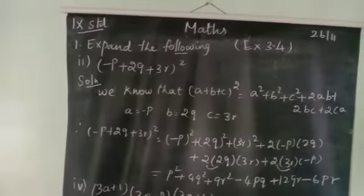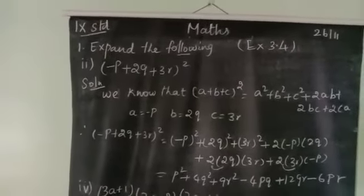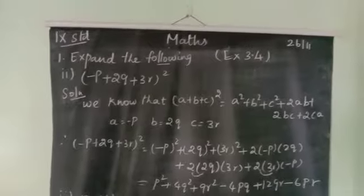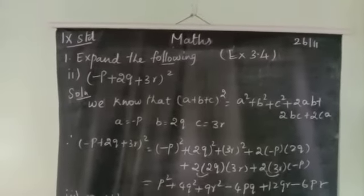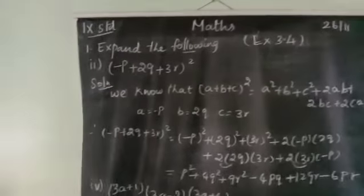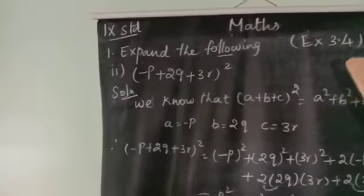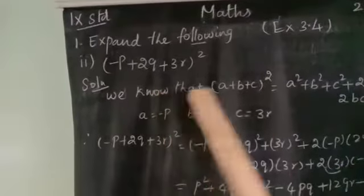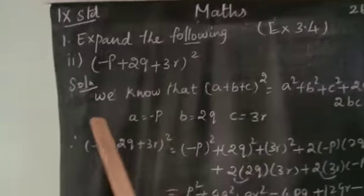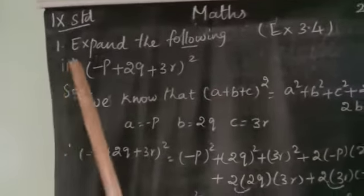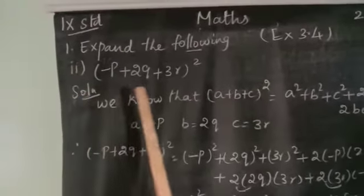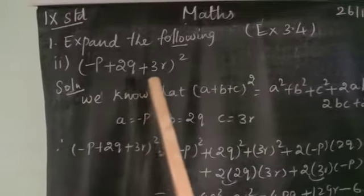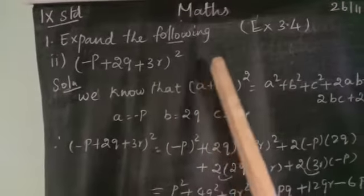Hey students, good morning to all. Today we will discuss about the sums by using algebraic identities. Now we see the first sum, second subdivision in exercise 3.4. The second one is minus p plus 2q plus 3r, the whole square.